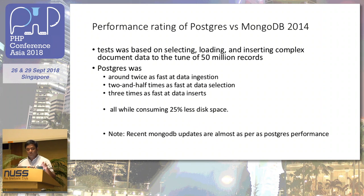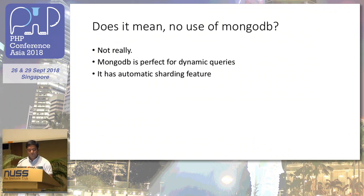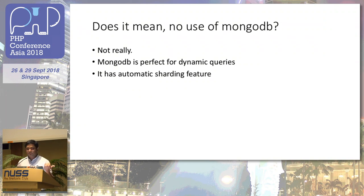Just to give an example — though the test is quite old, from 2014 — with 50 million records of complex document data put into both PostgreSQL and MongoDB, PostgreSQL was twice as fast at data ingestion, two and a half times faster at data selection, and three times faster at data insertion, while consuming 25% less space than MongoDB. MongoDB improved in their next release, so now it's almost par, but in many cases JSONB operations in PostgreSQL are still much faster. That's one reason why when we started our microservice platform at Telenor Health, we chose PostgreSQL instead of MongoDB. However, that doesn't mean we won't use MongoDB — it has better choices too, such as automatic sharding features if you want to scale.